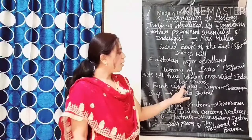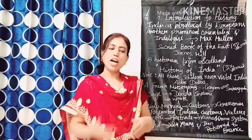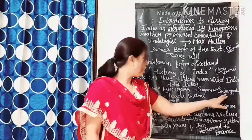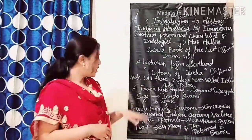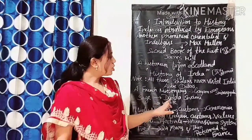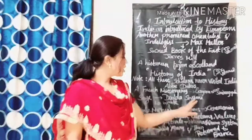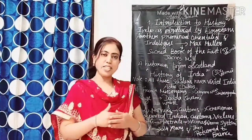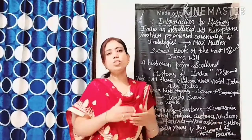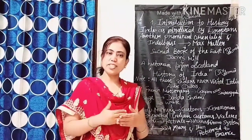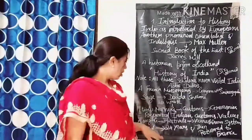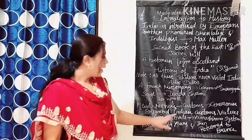Next, Abbé Dubois, a French missionary, arrived and settled in Ganjam near Srirangapatna. He lived there as a sage and adopted Indian culture and customs, and was called by local people as Dudda Swami. By staying as a sage, he wrote about Hindu manners, customs, and ceremonies — such as the marriage system, children's naming system, and funeral rites. He also documented Indian customs, the values and behaviors followed by Indian society.